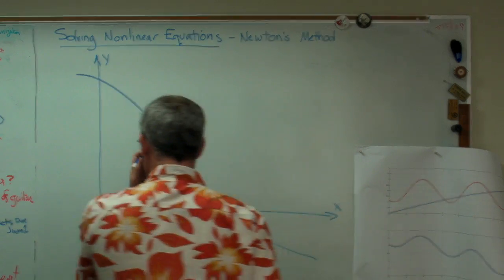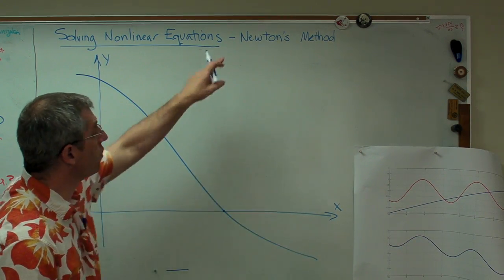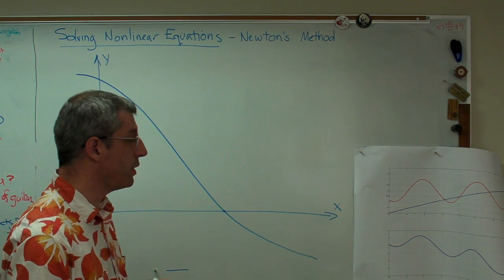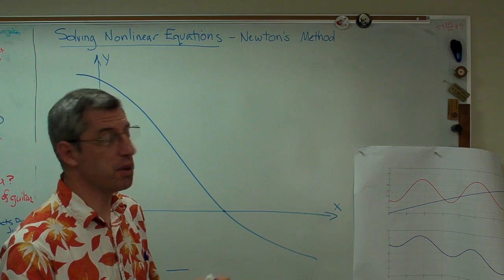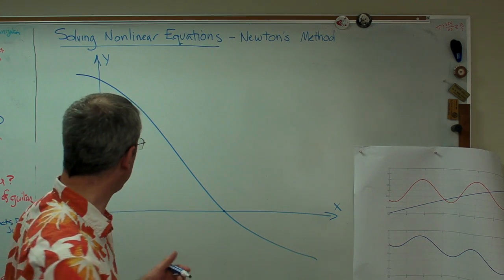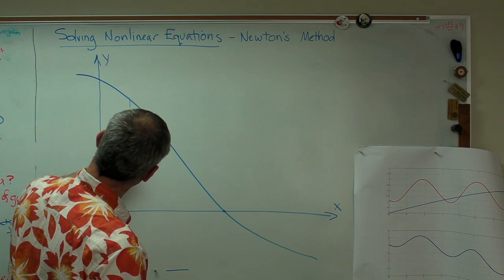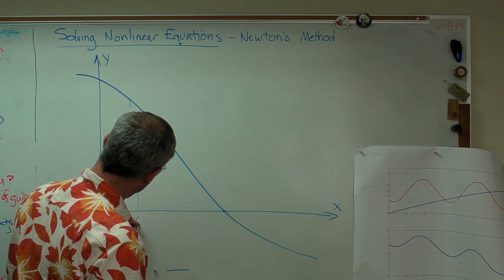All right, so let's try this. This is called Newton's method. Isaac Newton was the first guy to propose this. Since he was one of the two developers of calculus, he was pretty much the first guy who could have proposed this. So what we're going to do here is we're going to take an initial guess, and let's just take that initial guess right there. We'll call that x1.